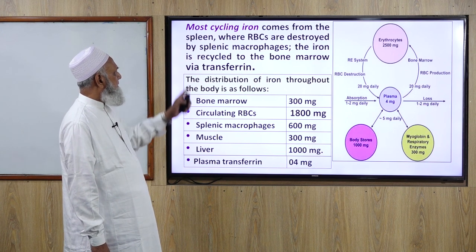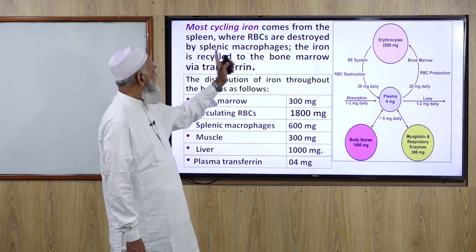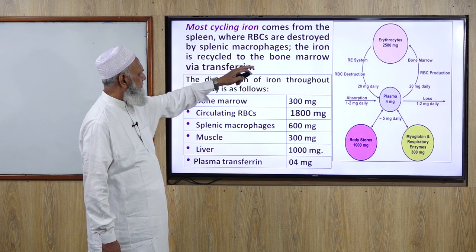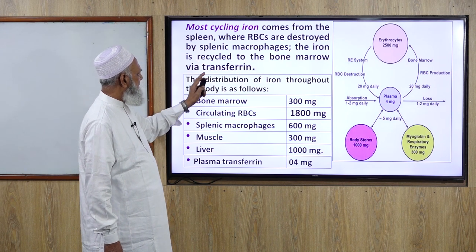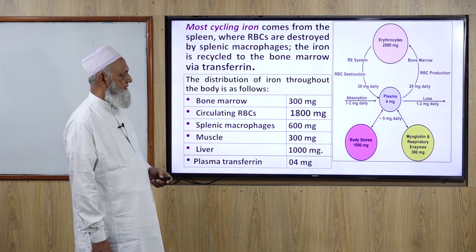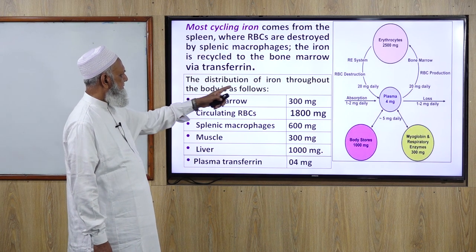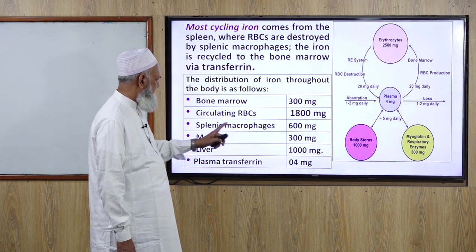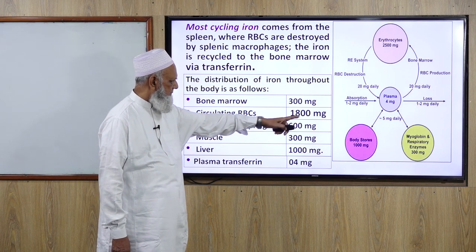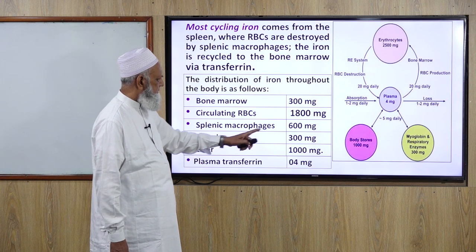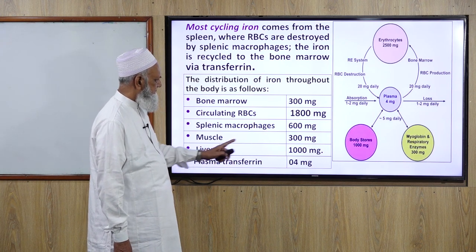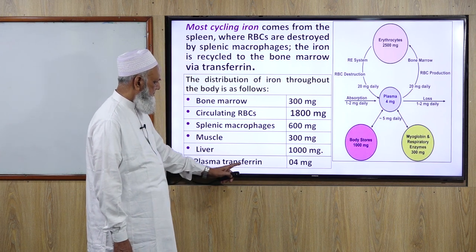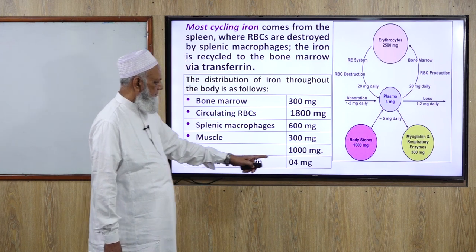Most cyclic iron comes from the spleen where RBCs are destroyed by splenic macrophages. The iron is recycled to the bone marrow via transferrin. The distribution of iron throughout the body: bone marrow 300 mg, circulating RBCs 1800 mg, splenic macrophages 600 mg, muscle 300 mg, liver 1000 mg, plasma transferrin 4 mg.